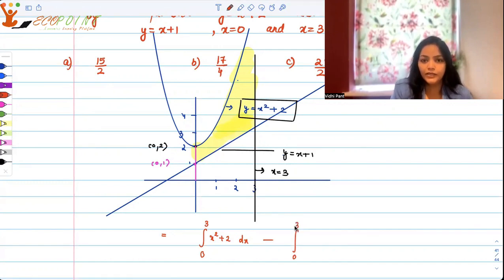again between 0 to 3, the area under the curve x plus 1.